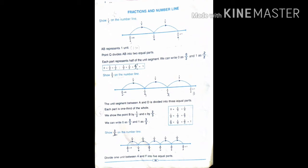AQ is equal to 1 by 2, QB is equal to 1 by 2. We can write 0 as 0 by 2. So 0 by 2 is equal to 0. If we divide by 0, we get the answer 0, because 0 means nothing.